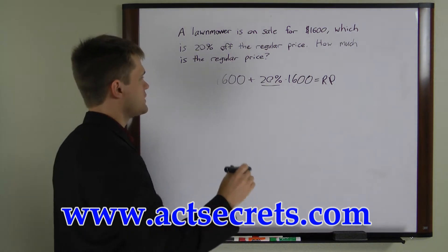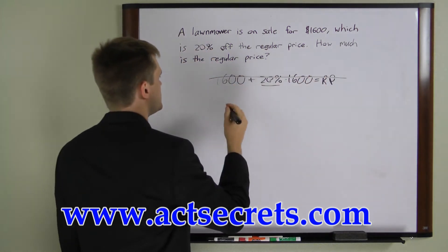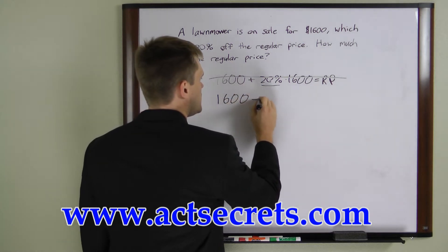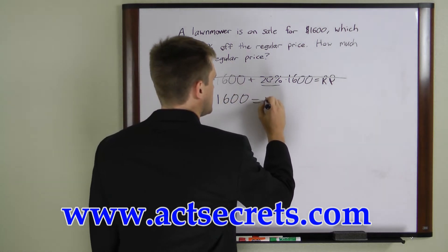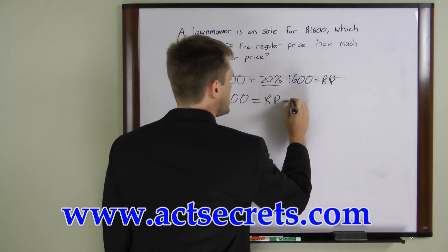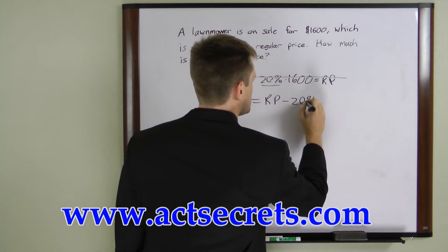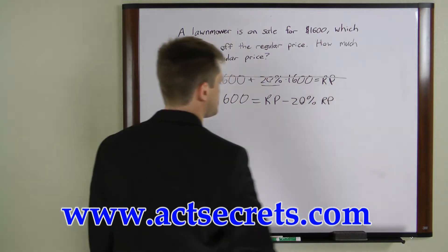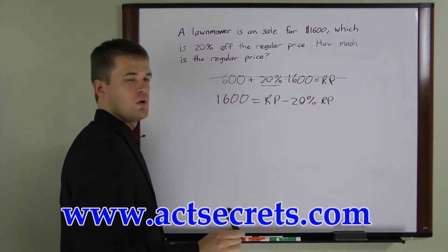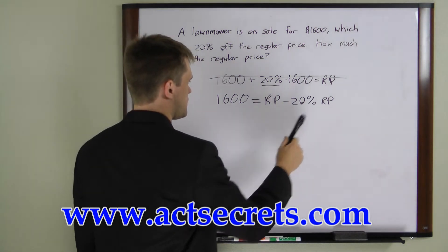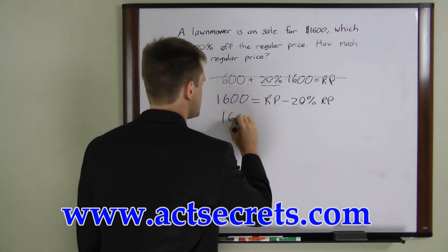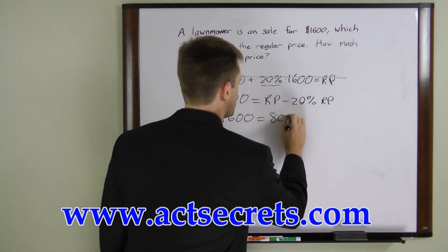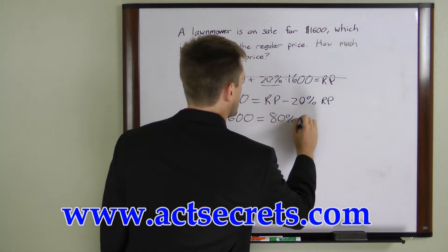So what you want to write instead is $1,600 equals the regular price minus 20% of the regular price. Or since it's regular price minus 20%, you can just write this as $1,600 equals 80% of the regular price.